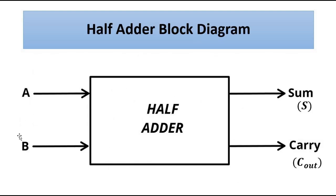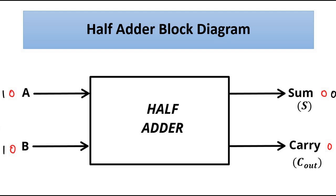The block diagram of a half adder has two inputs, represented as A and B, which are the two binary bits to be added together, and two outputs: one is the sum and the other is the carry. For example, 0+0 gives a sum of 0 and a carry of 0. For 1+1, the result is 0 but there is a carry of 1, so the carry output will be activated.